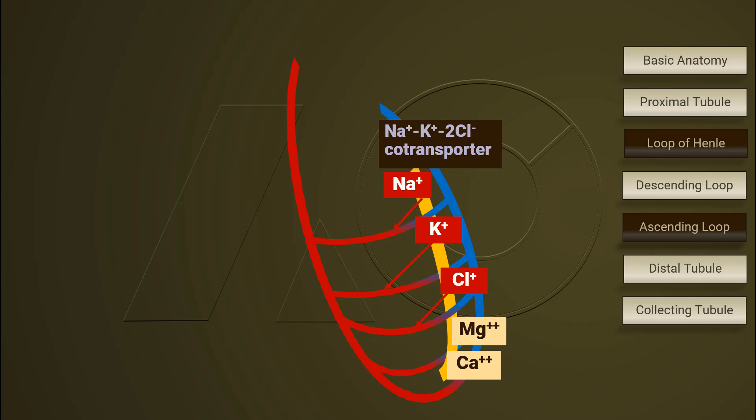Magnesium and calcium are removed from the luminal filtrate and these two cations enters the interstitial space through a paracellular route. In addition, 25% of tubular sodium chloride returns to the interstitial fluid.